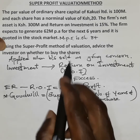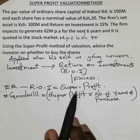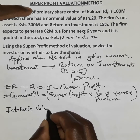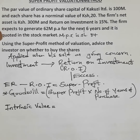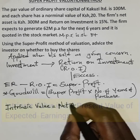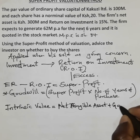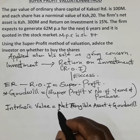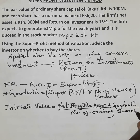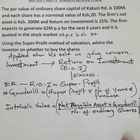Using the super profit method, we get the value of goodwill by multiplying the super profit times the number of years of purchase, which in this case is 6 years. We get the super profit, multiply by 6 to get the goodwill. The intrinsic value is the present value of expected earnings — the value of net tangible assets plus goodwill, divided by the number of ordinary shares. We then compare with 84 shillings in the market.